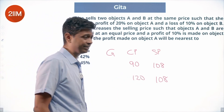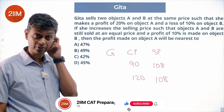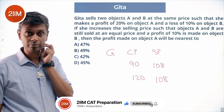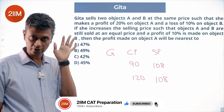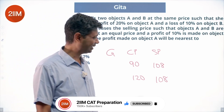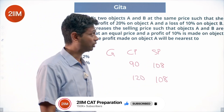She buys object A at 90 and sells at 108, giving a profit of 20%. She buys object B at 120 and sells at 108, giving a loss of 10%. Both check out. Super useful — if you take the selling price as 108, it is much simpler.